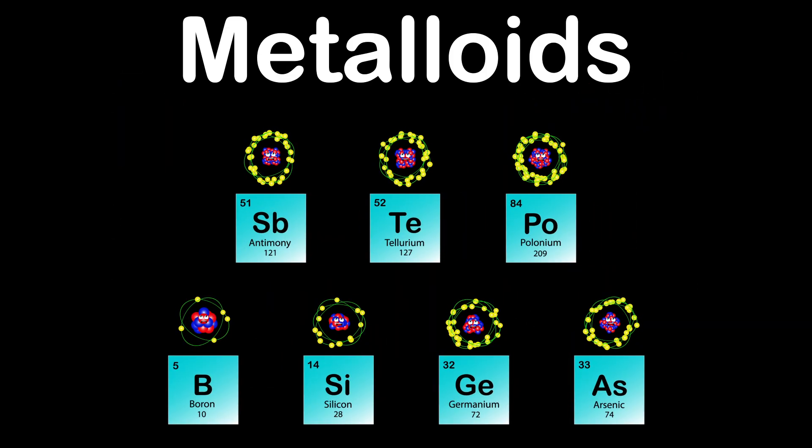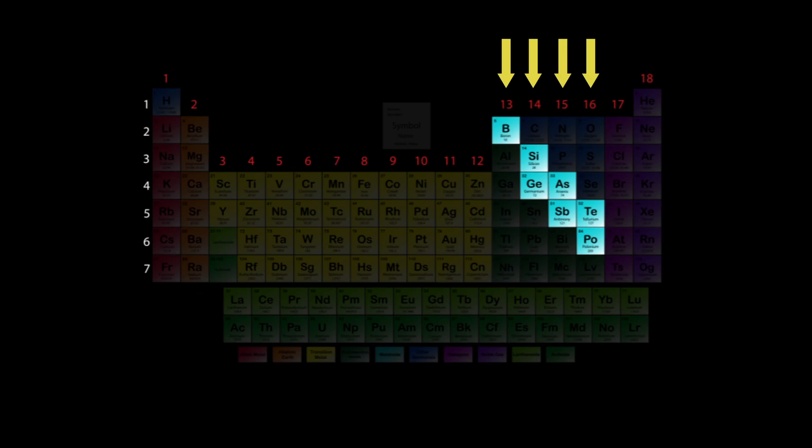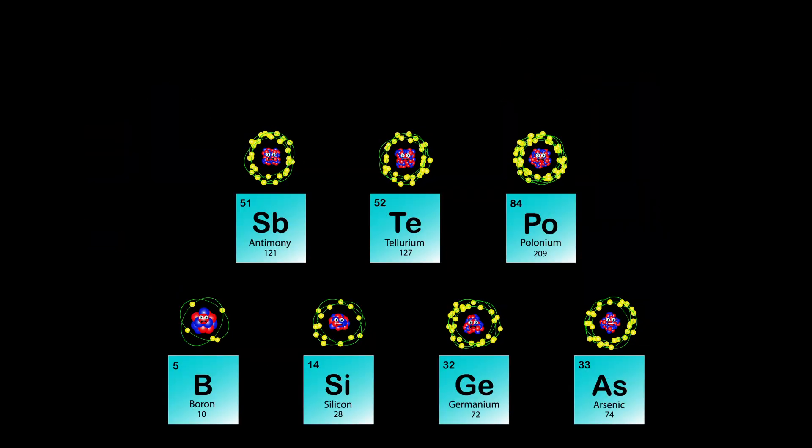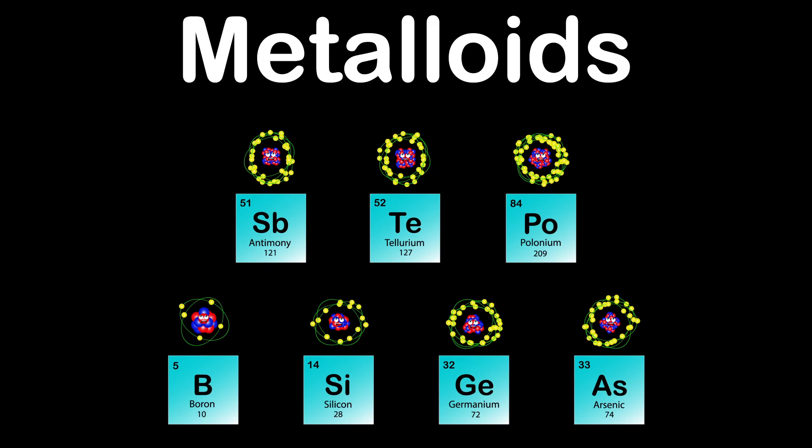We are the Metalloids of the Periodic Table. Groups 13 through 16 and periods 2 through 6 is where you find us in the Periodic Table Mix. We are the Metalloids of the Periodic Table.